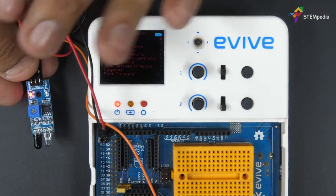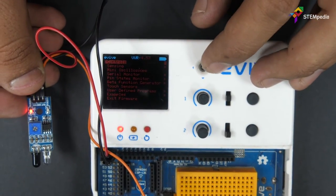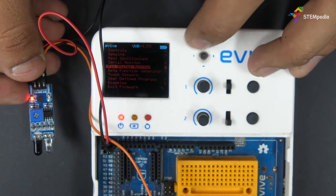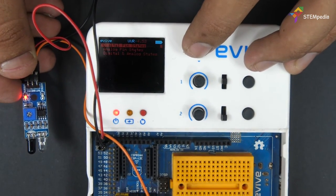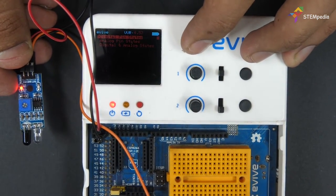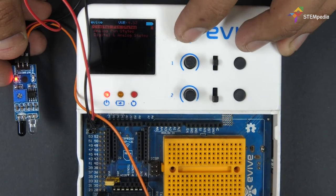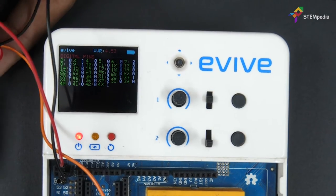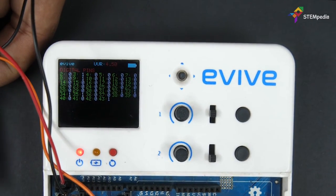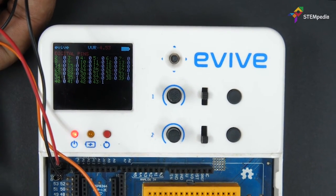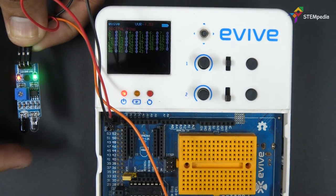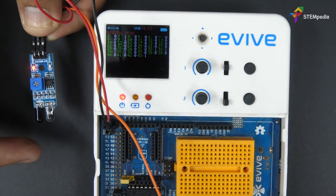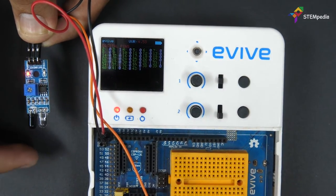Observe the value at pin 3. From evive's menu, navigate to pin state monitor and select digital pin states. Observe the value at pin 3. The default value is 1, but when we bring our hand close to the IR sensor, it changes to 0 and it changes back to 1 when we take our hand away. Similarly, test the other IR.